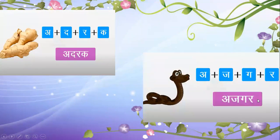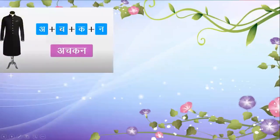Now we will move to the next word. Kya hai agla shabd? A-C-C-A-N — Achkan. Kya hai ye? You can see the picture — Achkan means long coat.